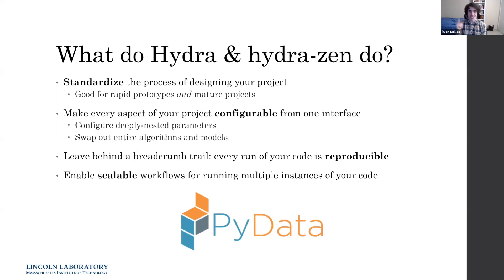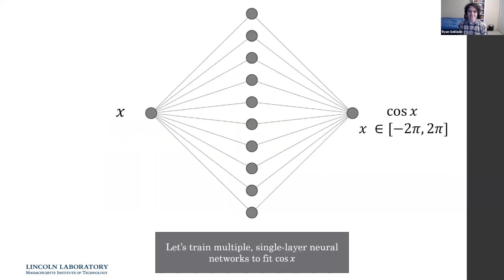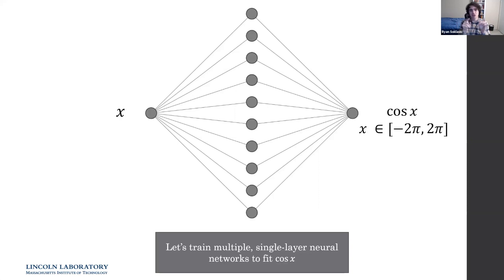Enough of the game library — let's do a PyData example using PyTorch Lightning and Hydra Zen to run boilerplate-free machine learning experiments. We're going to train the world's simplest neural network: a single-layer network meant to fit the cosine function between negative 2π and 2π, taking a single number and returning cosine of that number. We'll train multiple versions using different numbers of neurons in the layers and different batch sizes.